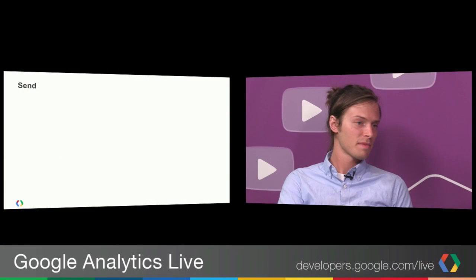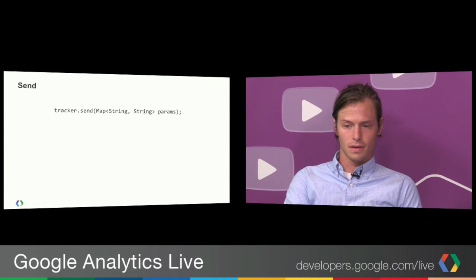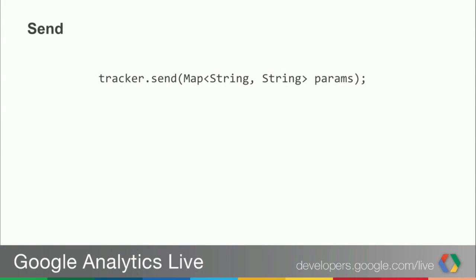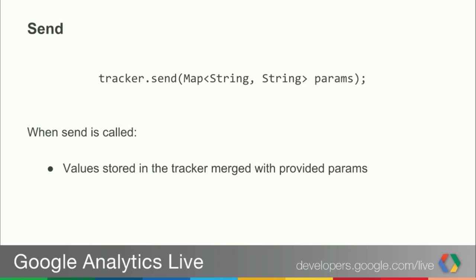The send method is very straightforward. It takes a map (Android) or dictionary (iOS) of parameters with name/value pairs — everything is treated as a string. When you call send, the values stored in the tracker are merged with the values provided in the map. Map values take precedence over what was previously set in the tracker. The hit is then queued for dispatch and you don't have to worry about it.